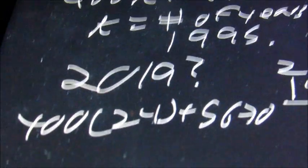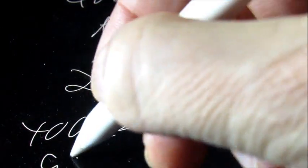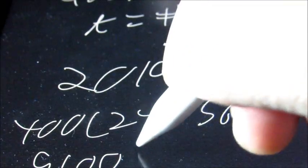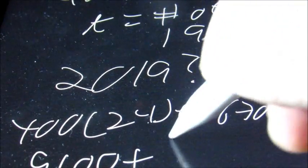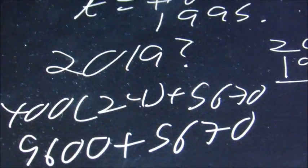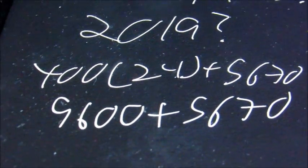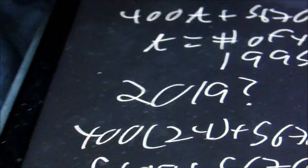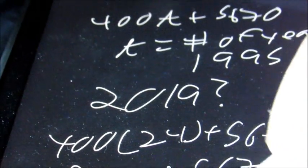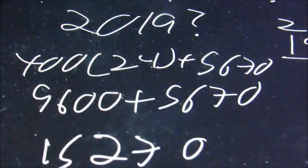24 times 400 is 9,600, plus 5,670. So now we can add these and we're going to get 15,270.